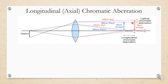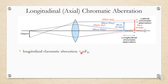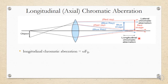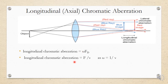Longitudinal chromatic aberration can be calculated by subtracting the focal point of the blue image from the red image. Through derivation, the formula is: longitudinal chromatic aberration equals omega (dispersive power) multiplied by the focal length of the lens. Dispersive power indicates how much dispersion is created when a ray of light is incident on the lens. That dispersion multiplied by the power of the lens gives the longitudinal chromatic aberration. Lesser the chromatic aberration, better the image. It can also be calculated as the dioptric power of the lens divided by the Abbe value.